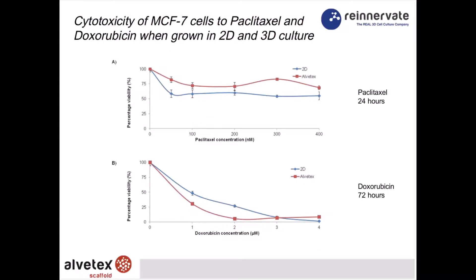We've also looked at other drugs, for example paclitaxel and doxorubicin — shown at 24 and 72 hours exposure. In panel A, paclitaxel does have a toxic effect and reduces the number of viable cells, but there is a remaining cohort of cells that appear resistant to the drug at the concentrations used. That's something which has been demonstrated previously and is also shown in 2D culture.